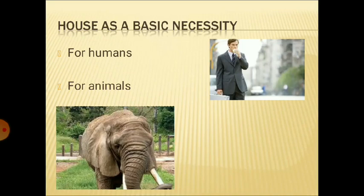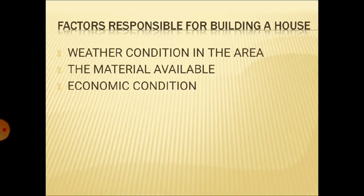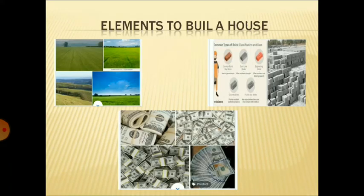A few animals we keep as pets, and for such animals we make houses at our home only. Many animals live in their natural habitat, like in a forest. Building a house depends upon three factors: the weather condition of the area, the material available to construct the house, and the economic condition — how much money you can spend to construct a house.